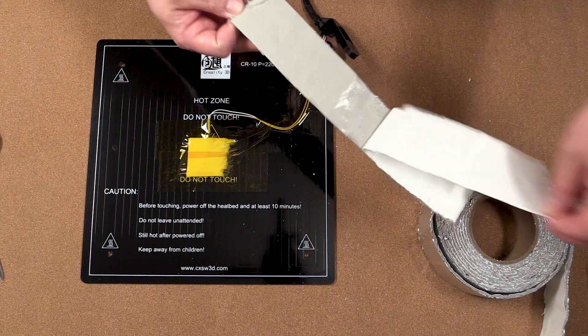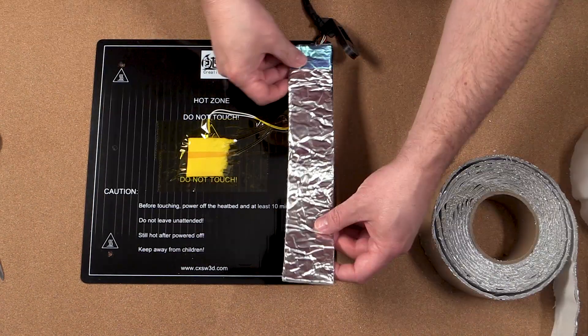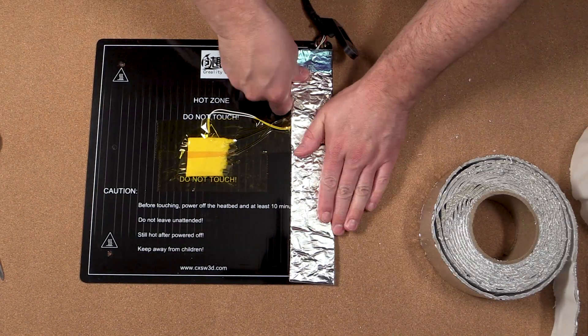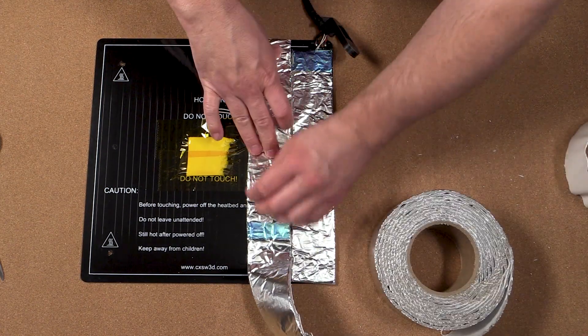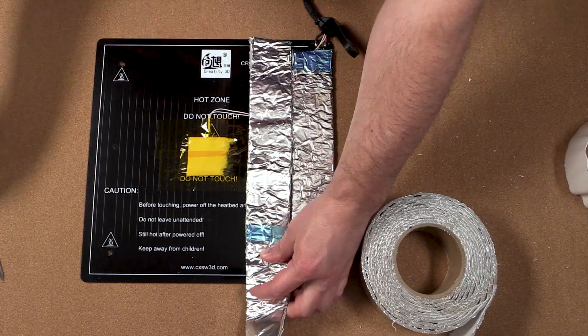You can then remove the adhesive backing and stick the strip into place. You'll want to repeat this process for the whole length of your printer plate.